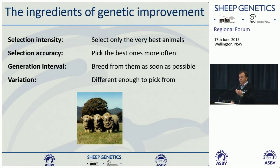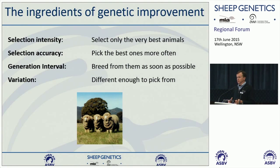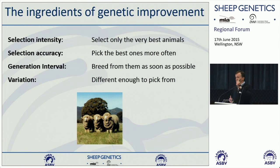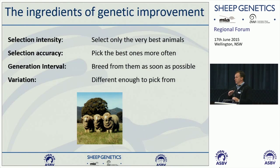There are three things that we can manipulate to alter our rate of genetic progress. First, selection intensity — how many of these animals am I going to keep as replacement breeders? If I'm keeping only 1% of young rams versus 5%, I can choose animals of much higher genetic merit. The smaller the proportion kept, the bigger the difference between the ones used to breed and the average of the mob.